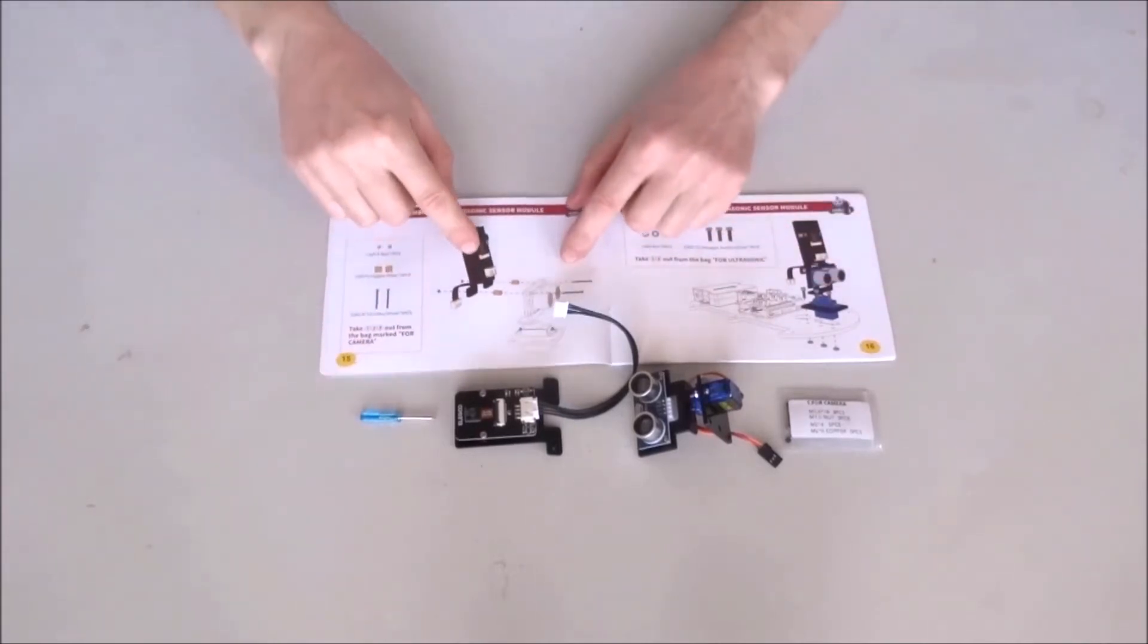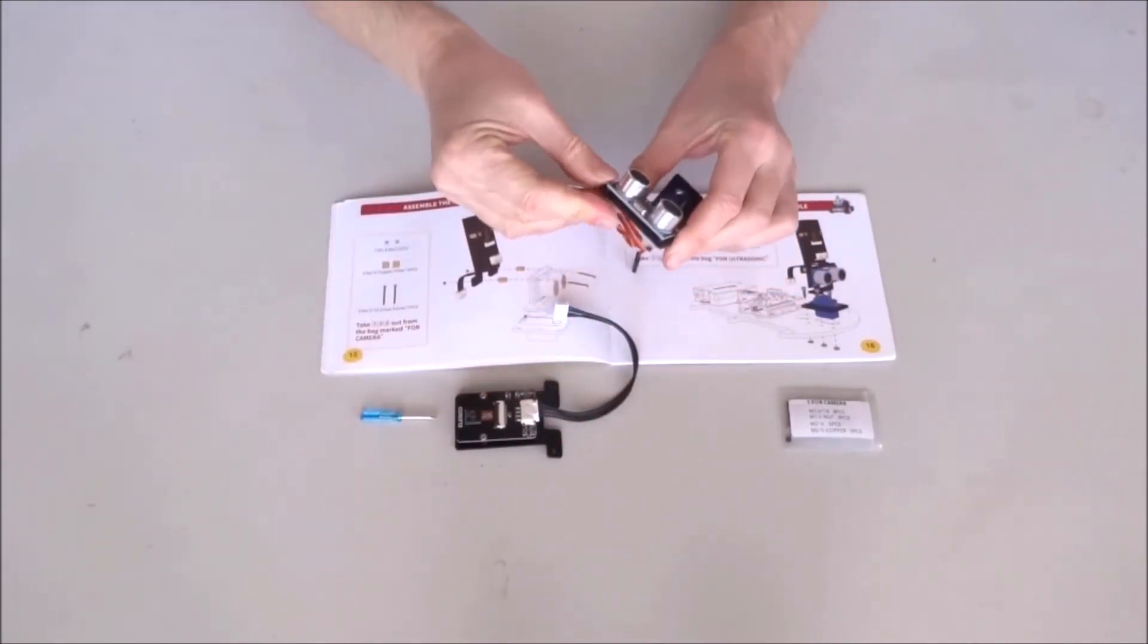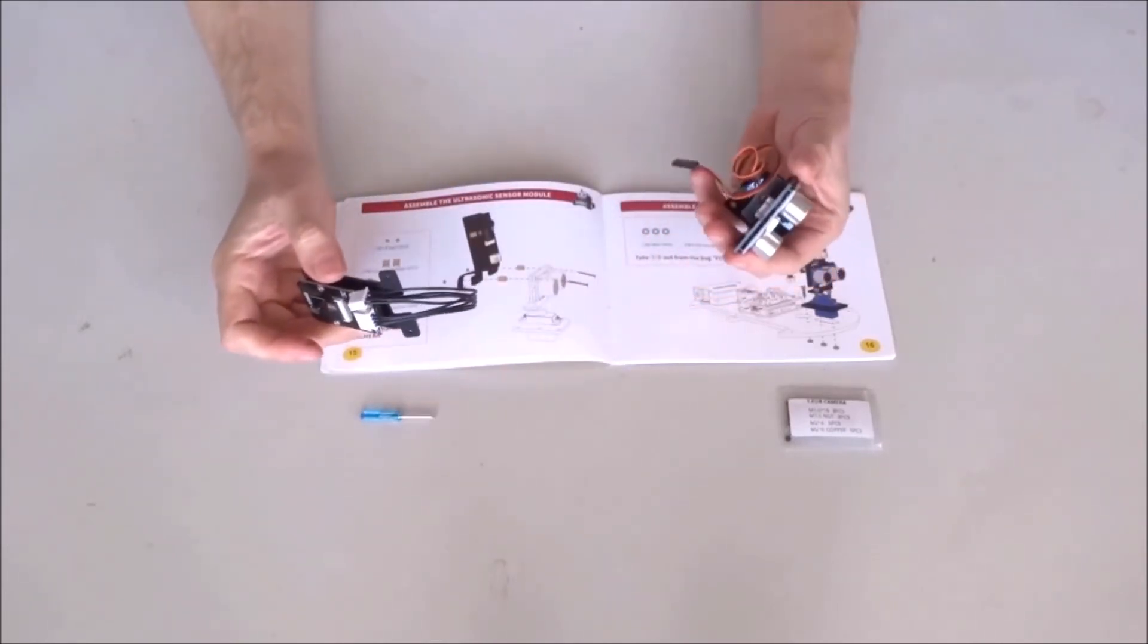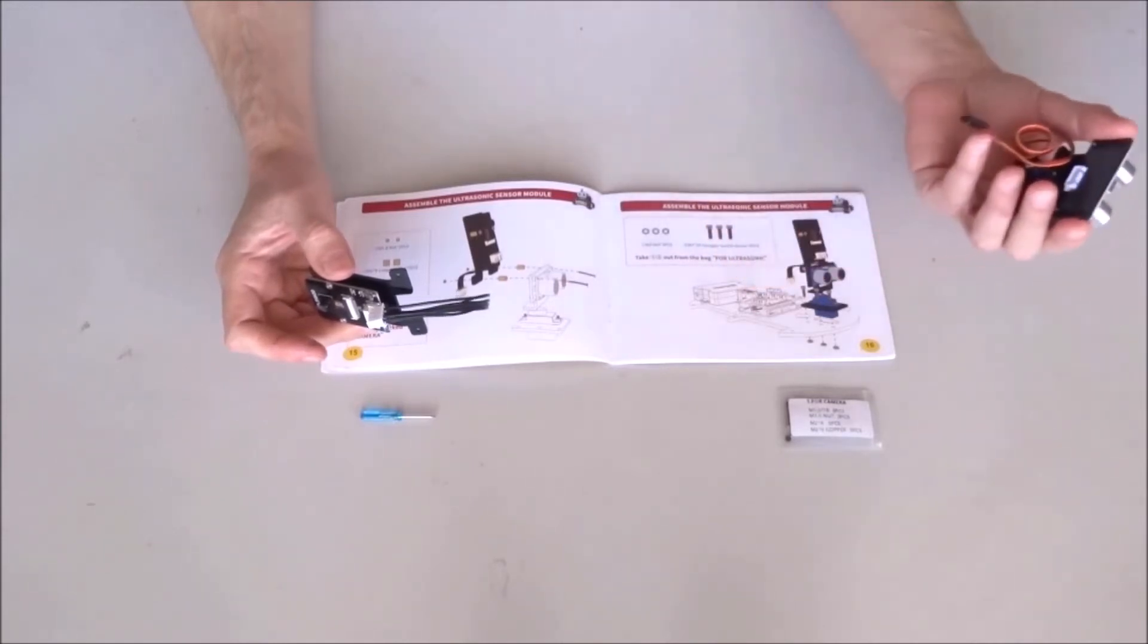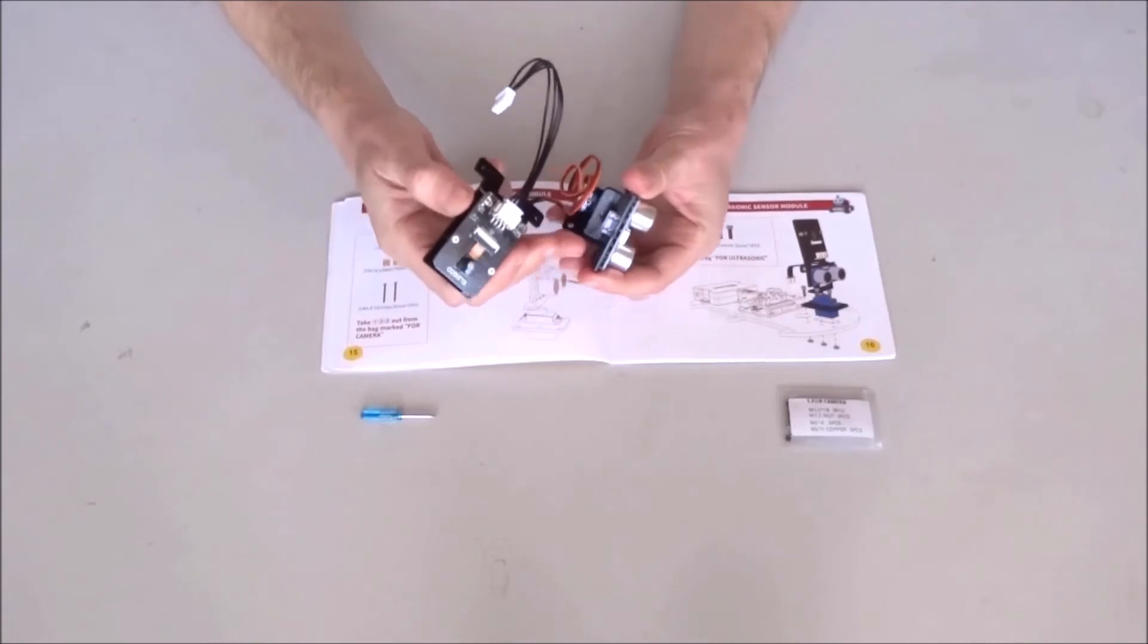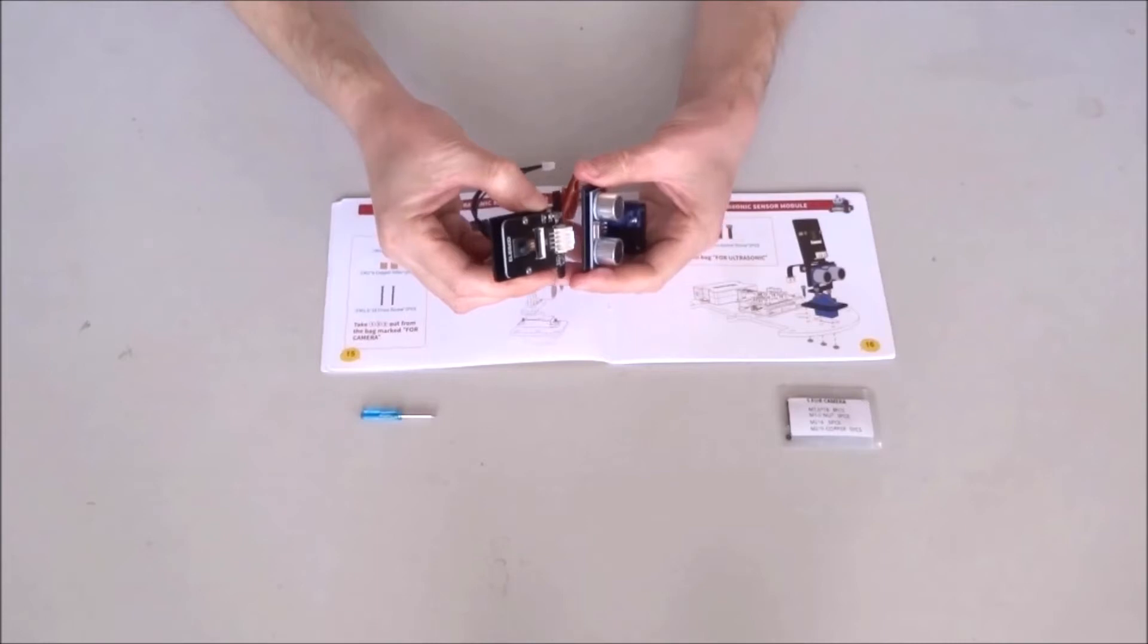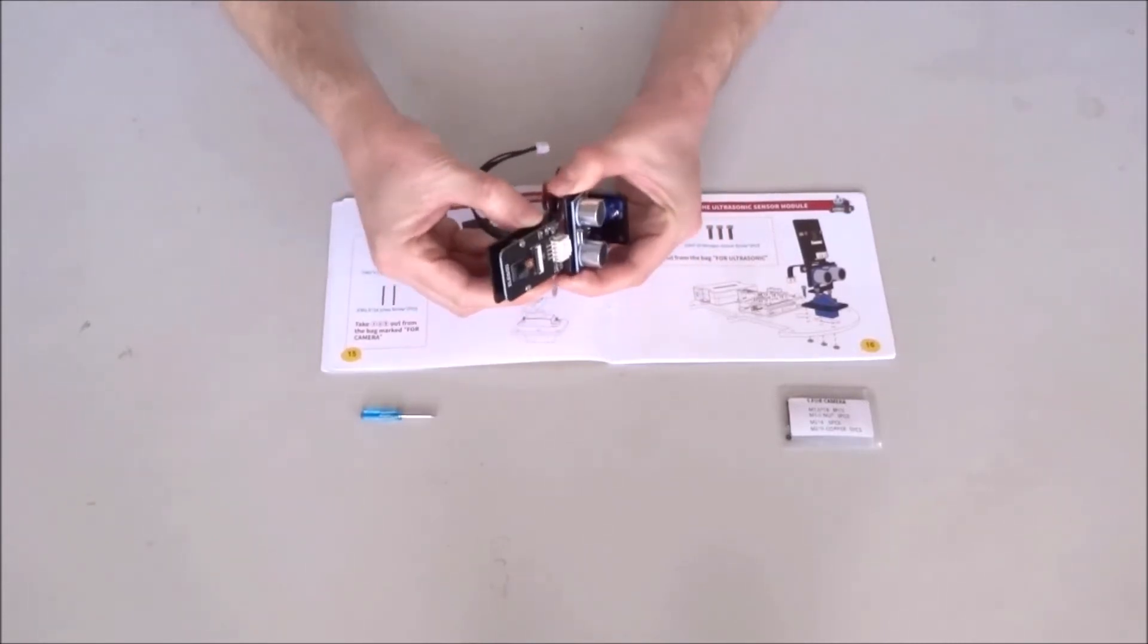Now I'll go ahead and install the camera on top of the ultrasonic ranger. Before I do anything else, I'll carefully examine how the different parts will have to go together. So the camera will be installed right here with some spacers. This cable will have to go here on the back.